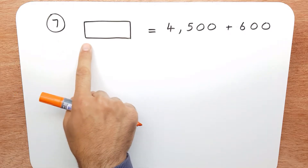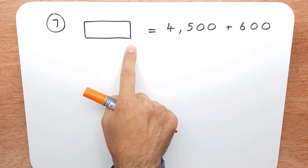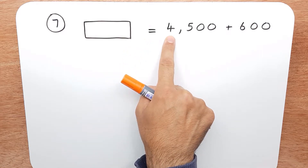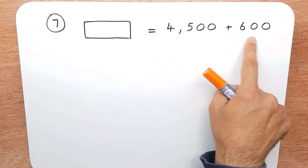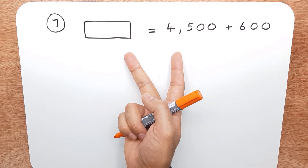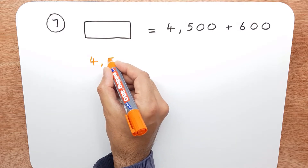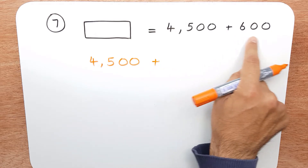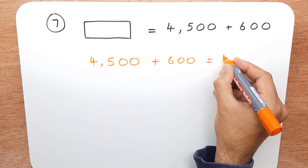Question 7. We're given this box, which stands for a number, equals 4500 add 600. Now if you look, we normally have it the other way around. We normally see this question as 500 plus 600 equals the box.